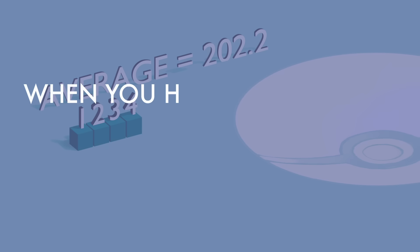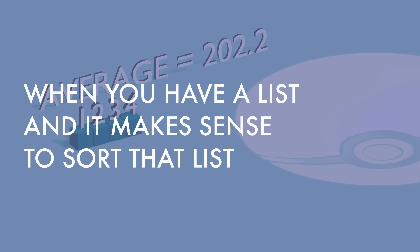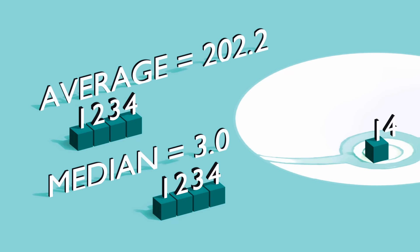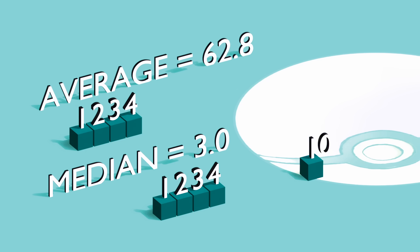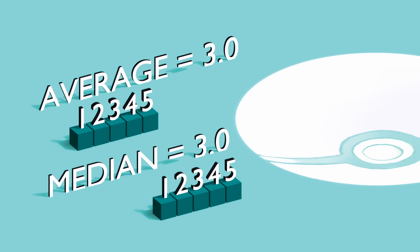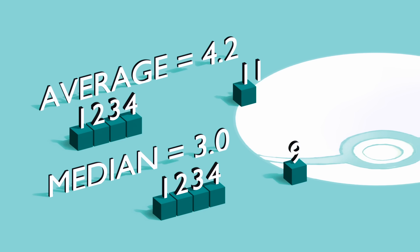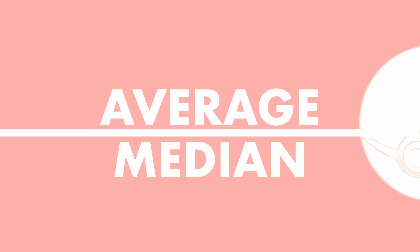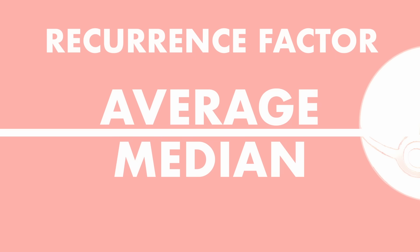In situations where you have a list and it's meaningful to sort that list — like episode numbers — you also want to look at the median, which is just the middle value of that sorted list. The median is nice because it's not as sensitive to outliers. No matter how big we make that other number, the median is always 3. But then you notice something: if we don't have an outlier, the average and the median are equal. Whereas if we have a strong outlier, the average can be smaller or larger than the median, depending on which way the outlier is going. So for my recurrence factor, I just took the average and divided it by the median.